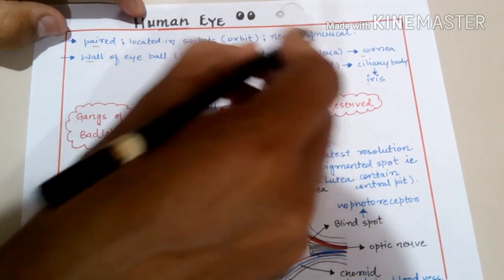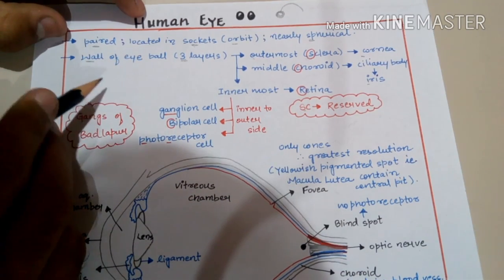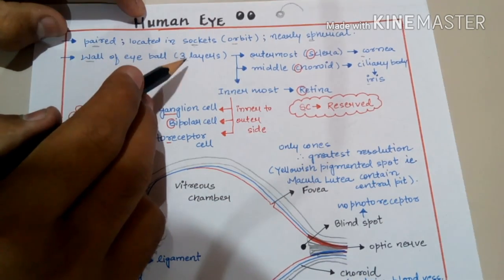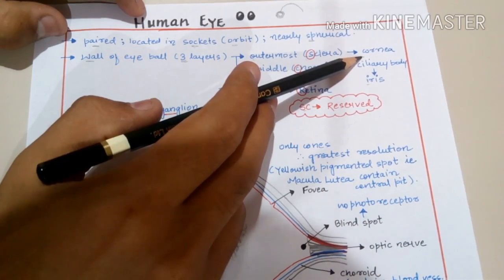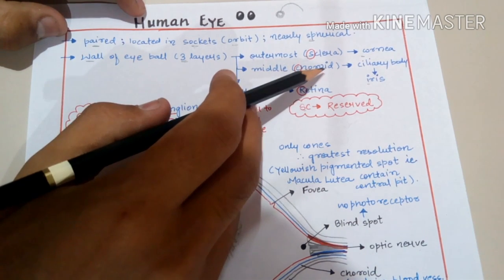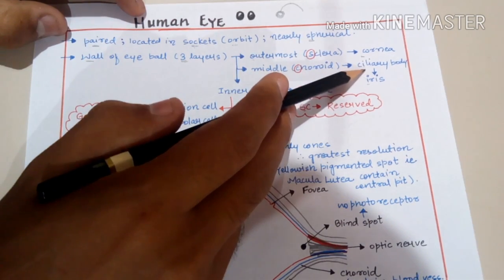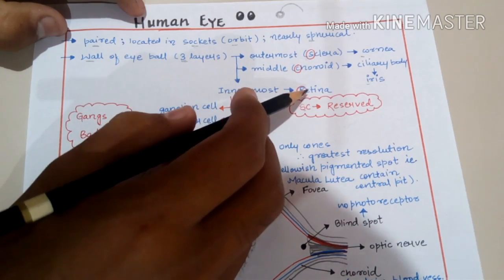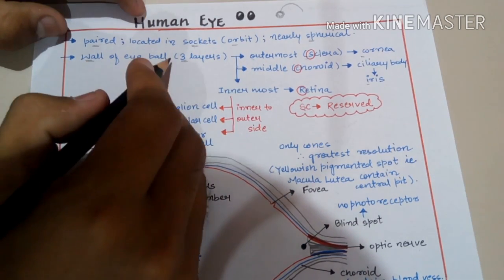The human eye is nearly spherical. If we talk about the wall of the eyeball, it is protective in nature and is made up of three layers. The outermost layer is the sclera, whose anterior part is known as the cornea, which is a little bit thicker. The middle layer is the choroid, which has a thicker anterior part — the anterior one-third region — known as the ciliary body, which continues to form the iris. The innermost part is the retina.